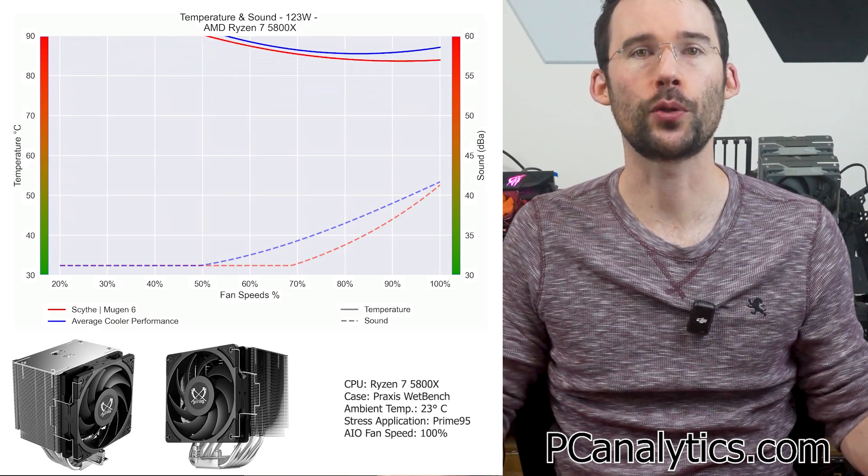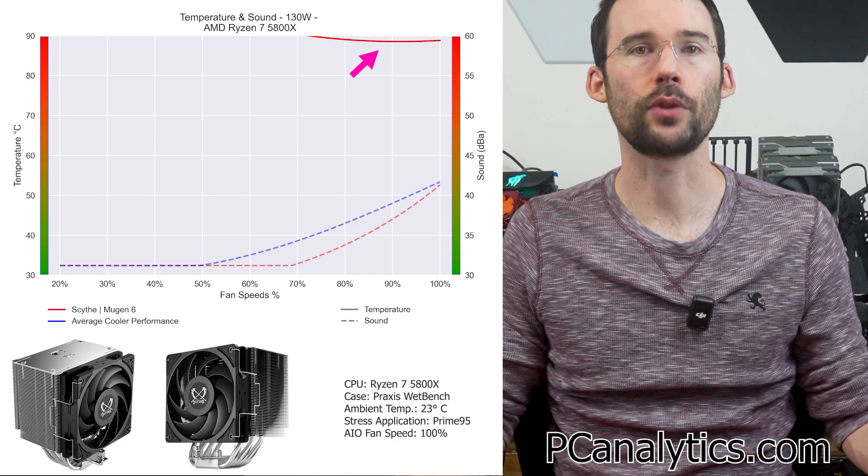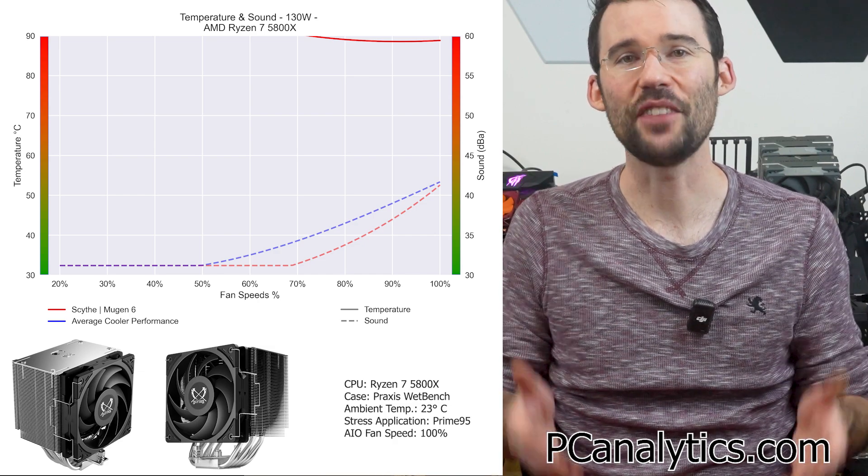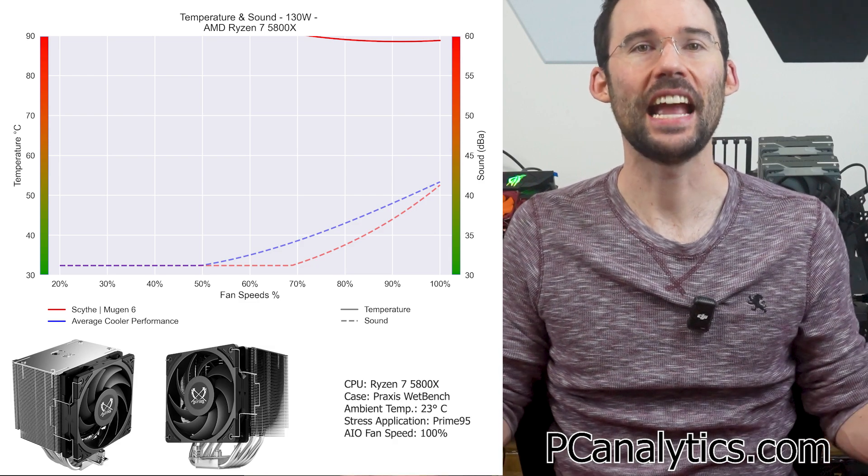When we push the cooler to 130 watts, we can see that the Mugen 6 struggles to handle the higher heat loads, which is to be expected from a cooler of this size. And if you want to stay up to date on more benchmarks, hit that subscribe button.